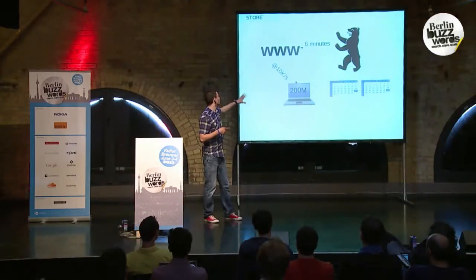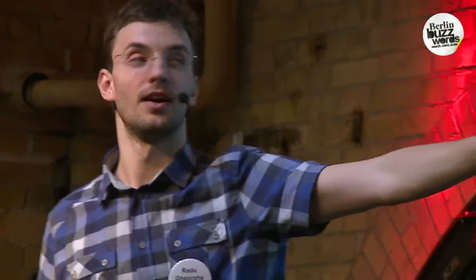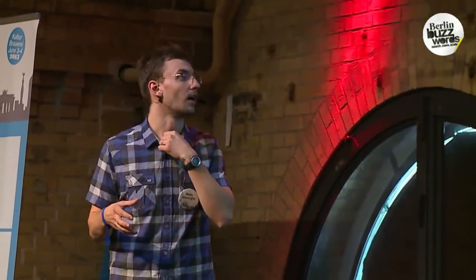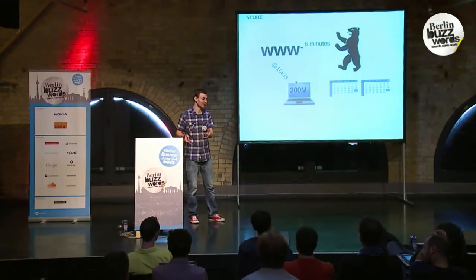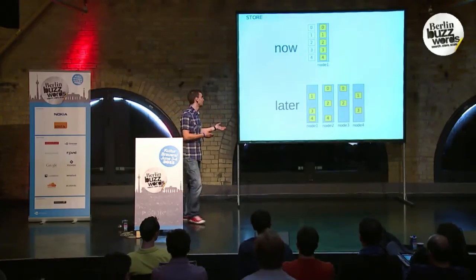That bear over there is the Berlin bear. So 200 million logs means if the whole Berlin accesses your website every day, you would be able to store those logs for two months. And 10,000 new logs per second means if the whole Berlin gets to your website within six minutes, with that laptop you should be able to hold that load. But if you do that at 10,000 per second, your 200 million would not be two months — it would be something like six hours. So that's when, if you want to store more logs, you have to add more servers.